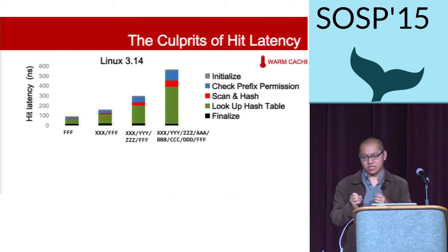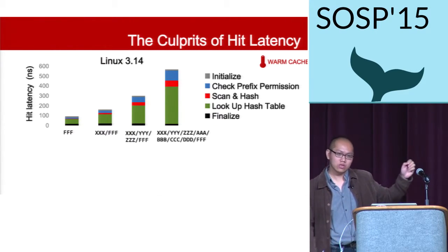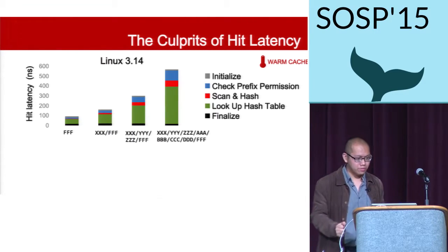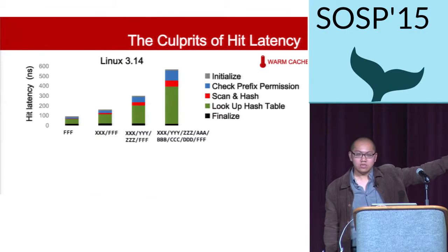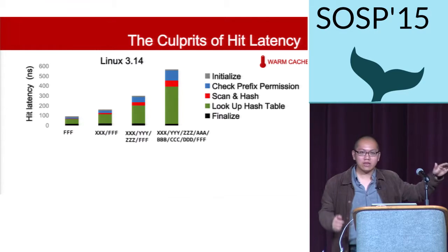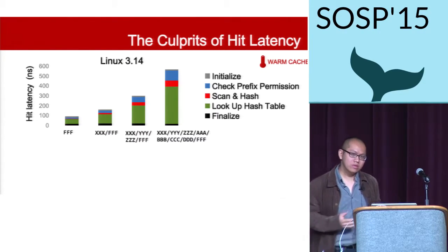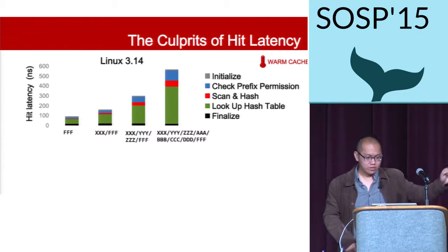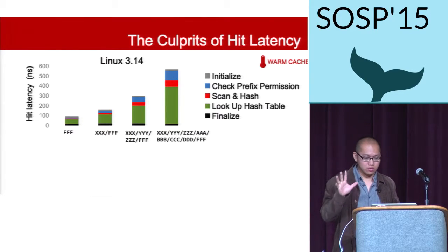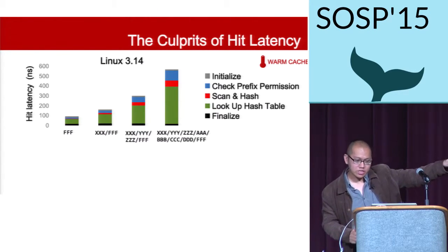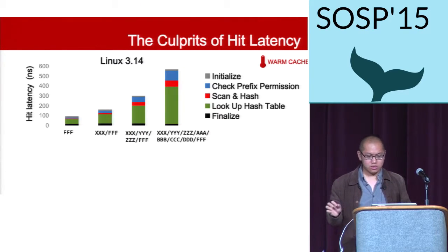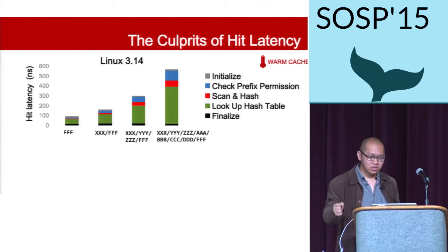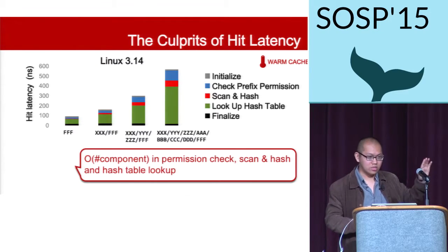Let's first look at hit latency. We collected numbers on Linux 3.14, our baseline throughout the paper. The y-axis is hit latency in nanoseconds, and the x-axis shows path patterns with increasing numbers of components. Naturally, a longer path takes more time. Breaking this latency into five components, we see that — except for initialization and finalization — the other three stages (checking prefix permissions, scanning and hashing a path, and looking up the cache table) all scale linearly with the number of components.